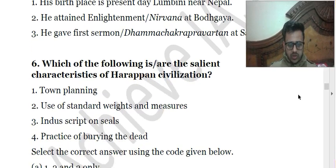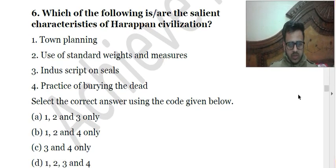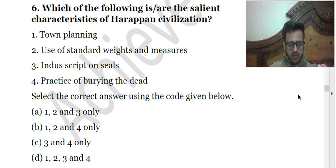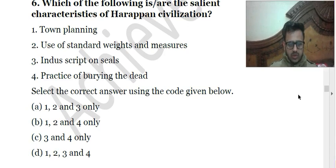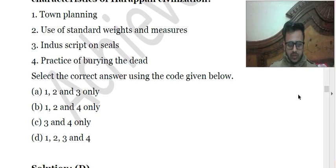The sixth question: which of the following are the salient characteristics of the Harappan civilization? First: town planning; Second: use of standard weights and measures; Third: script on seals; Fourth: practice of burying the dead. All of these things were the chief features of the Harappan civilization. They had a very well-planned grid layout, used weights and measures, had script written on their seals, and practiced burying the dead. The solution is D — 1, 2, 3 and 4.